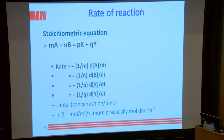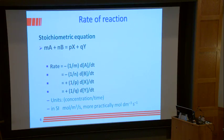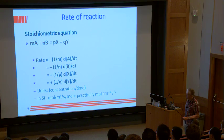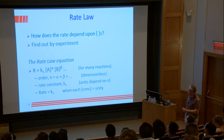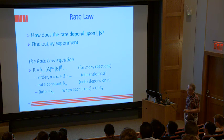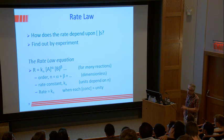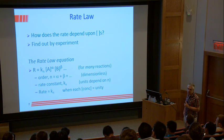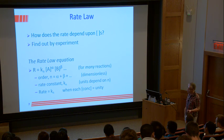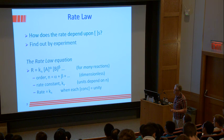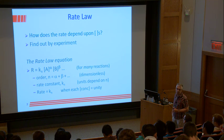The units of rate are concentration per unit time — moles per meter cubed per second in SI, or more practically moles per decimeter cubed per second. The rate law is: rate = k[A]^α[B]^β... The total order of reaction is alpha + beta + gamma, normally dimensionless. The rate constant is written k_N, so first order is k₁, second order k₂. The rate equals k_N when each concentration is unity.